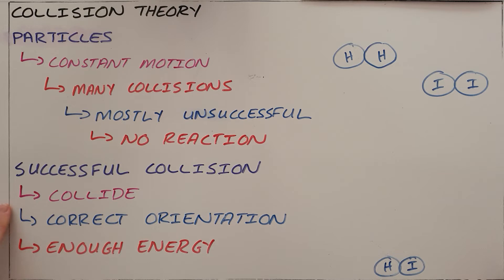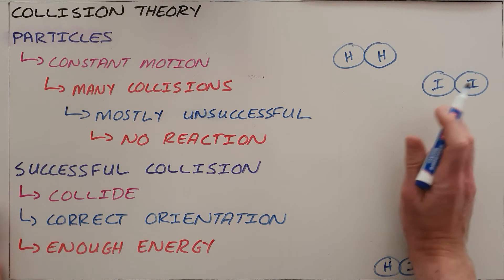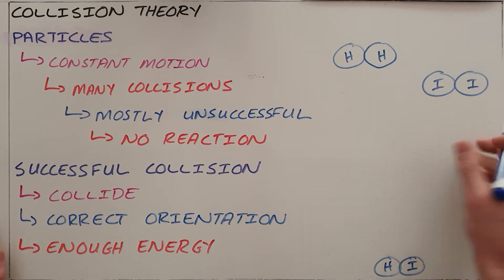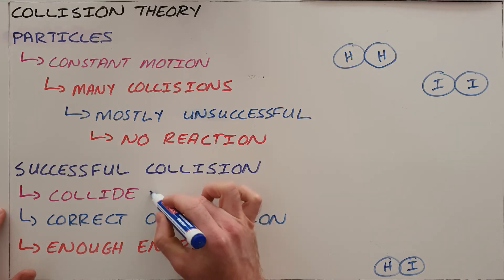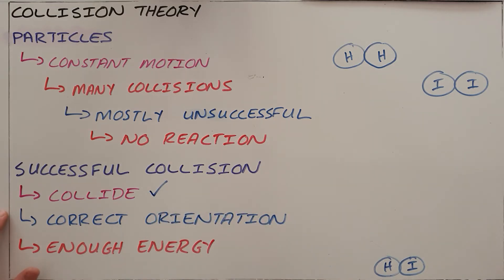We need these two molecules to collide with each other and hopefully end up by forming hydrogen iodide molecules. The first principle of collision theory says that a successful collision requires these molecules to collide with each other, which means that they must bump into each other so that there can be a transfer of electrons and a bond that can form. That is the first condition or requirement that they must collide.